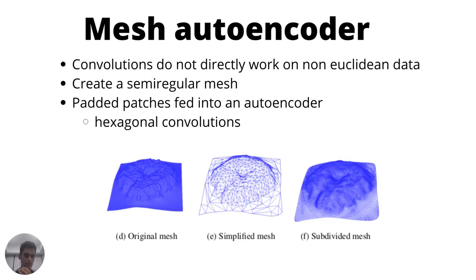Now let's talk about the mesh autoencoder. The main problem is that we can't directly apply convolutions to non-Euclidean data such as meshes. So through a process of simplification and subdivision, we create a semi-regular mesh, as can be seen from these diagrams. The semi-regular mesh is locally regular, meaning it has a constant vertex degree, which allows us to perform convolutions. We then sample the surface of this subdivided mesh and create padded patches, which we feed into an autoencoder that performs hexagonal convolutions in the encoding and decoding process.